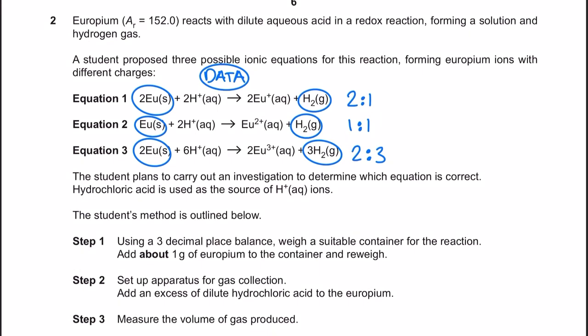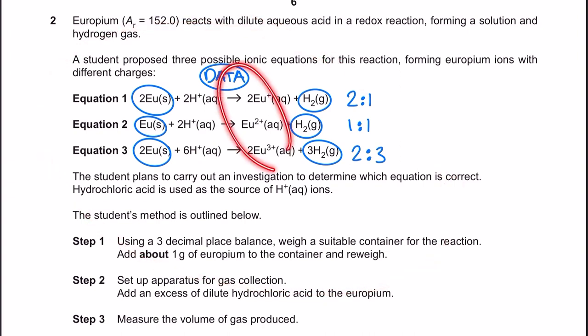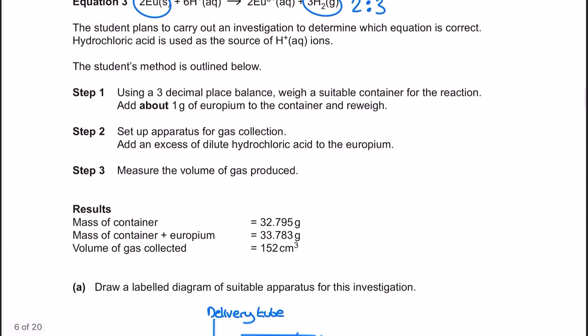Question two starts off with a lot of information and is very heavy on moles. The content is framed around the idea that we don't know the ionic charge on the europium ion produced in the reaction between europium metal and dilute acid. This influences the balancing when the acid reacts with the europium metal to produce hydrogen. You've got a lot of reading to do — the gist is we don't know which europium ion is correct, and depending on which it is, we have different ratios between the europium and the hydrogen.